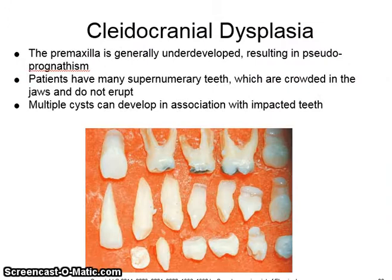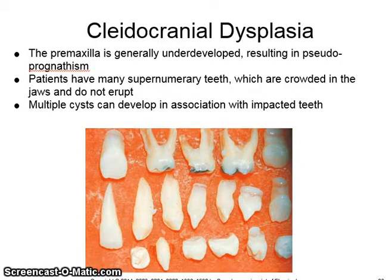Cleidocranial dysplasia. The premaxilla is generally underdeveloped, resulting in pseudoprognathism. Patients have many supernumerary teeth, which are crowded in the jaws and do not erupt. Multiple cysts can develop in association with these impacted teeth.